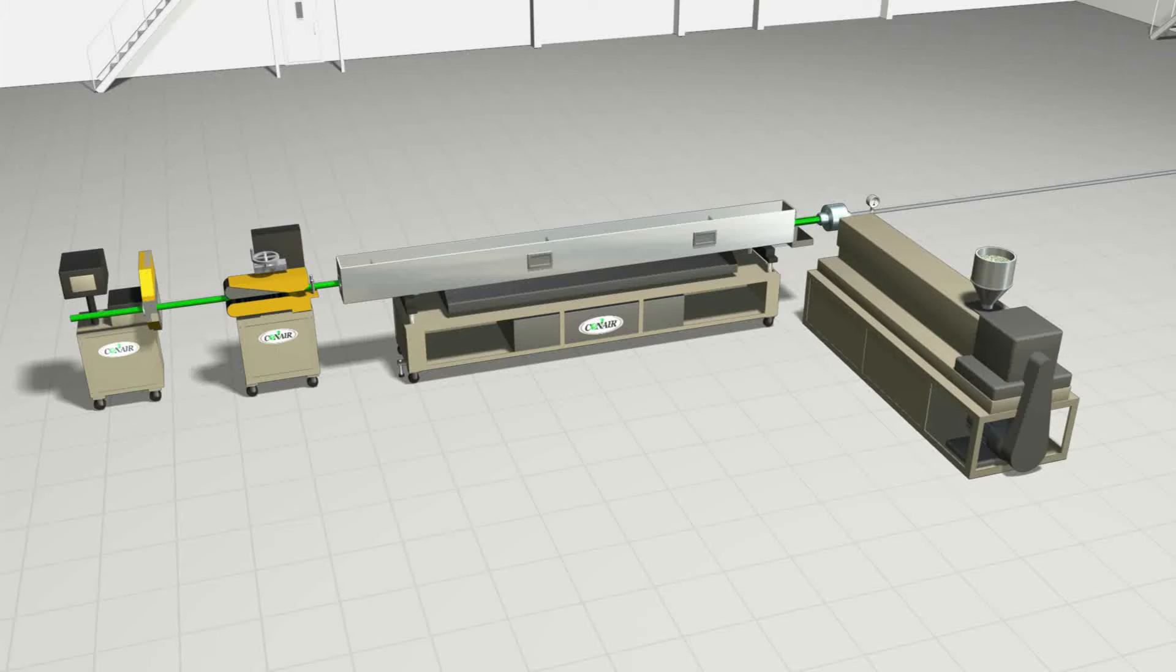When extruding precision tubing that is cut to length as part of the extrusion process, the administration of air is critical to maintaining size precision.